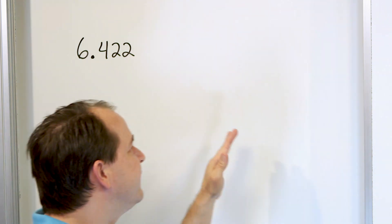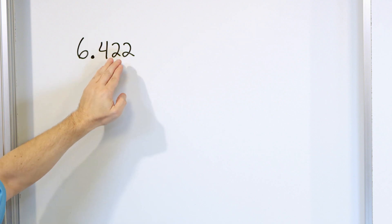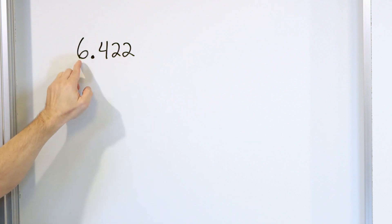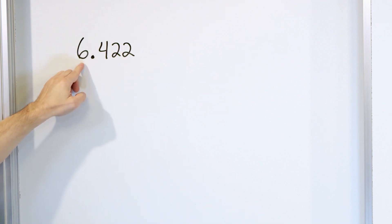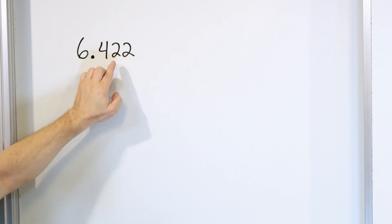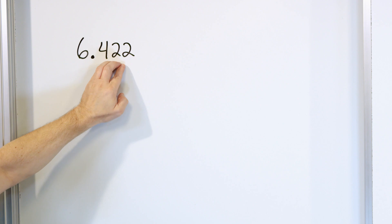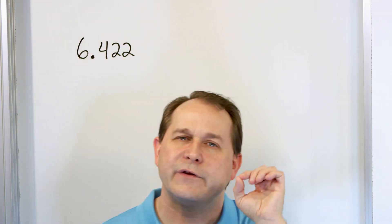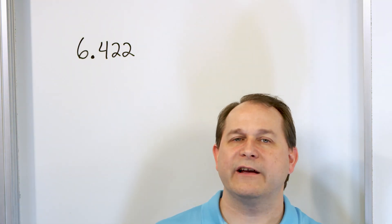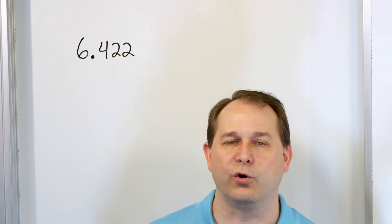The closer the numbers beyond the decimal are to 999, the closer we'll be to the next whole number, which is seven loaves of bread. And the closer these numbers are to 000, the closer we'll be to six. So the numbers beyond the decimal are only there to tell you how close you are to the next whole number.